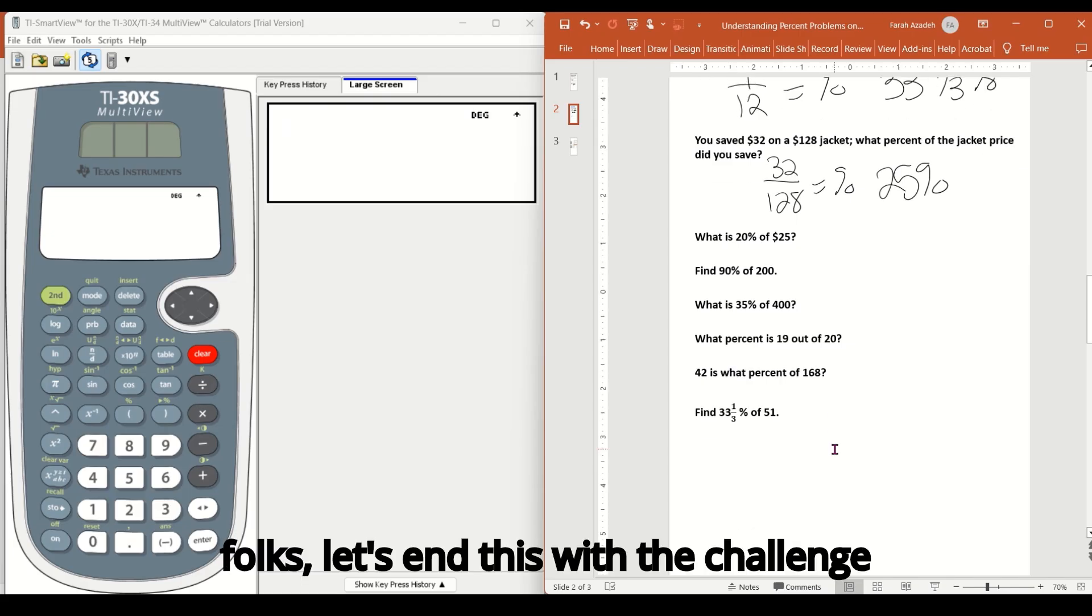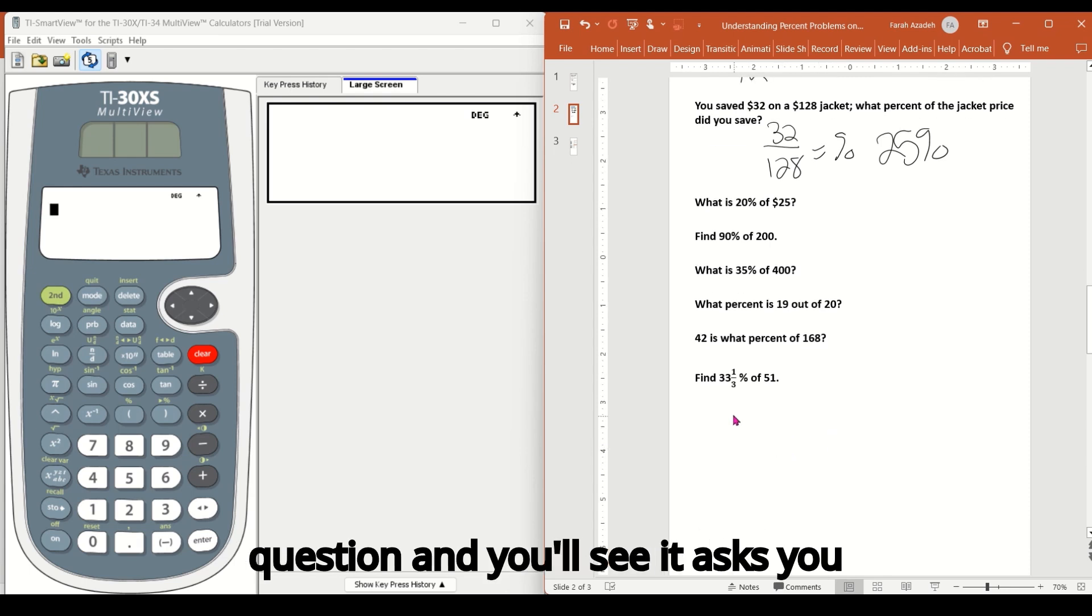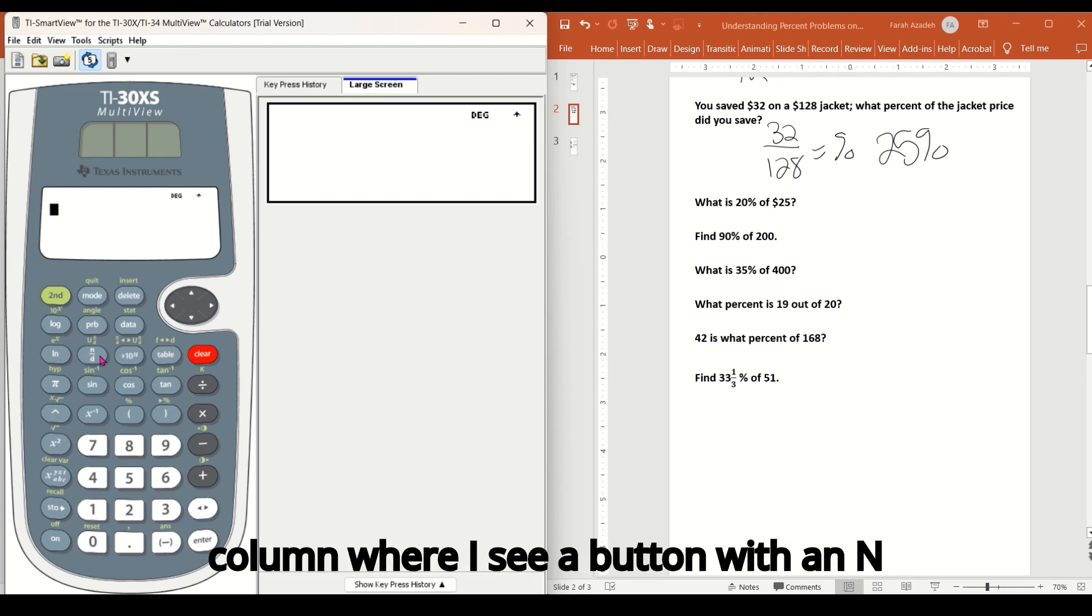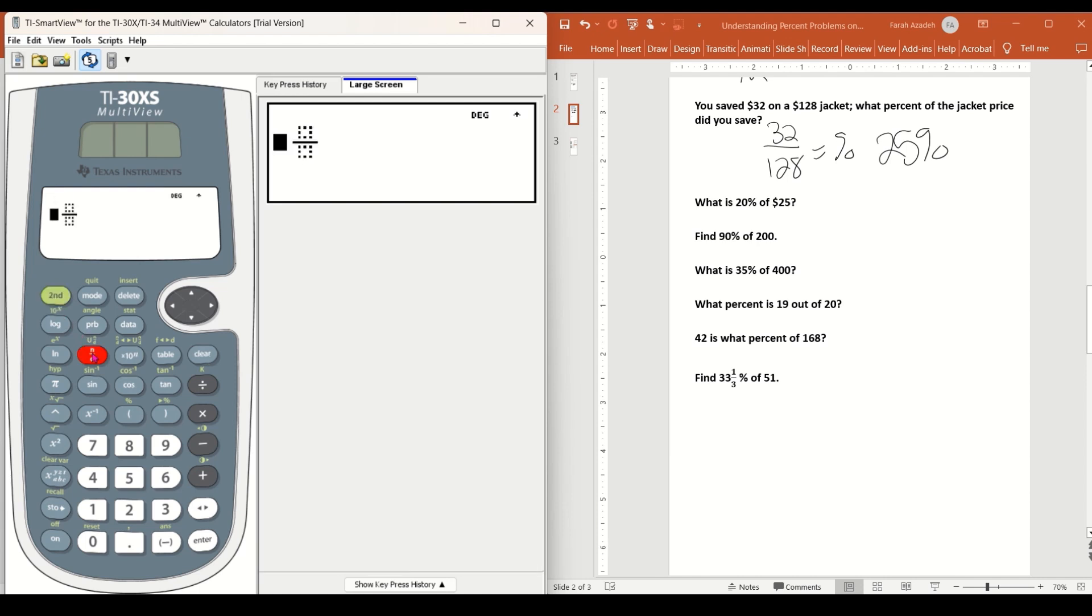Okay, folks, let's end this with the challenge question. And you'll see it asks you find 33 and one third percent of 51. Guess what? Your calculator can do this. So let's go over to our calculator. I've already cleared the screen. So I want to input 33 and one third percent just the way as I see it. I'm going to go to the third row down and I'm going to go over to the second column where I see a button with an N and a D. Above it in green is a U with the N and the D. And that is our mixed numbers function that I want. And I need to press second that button.